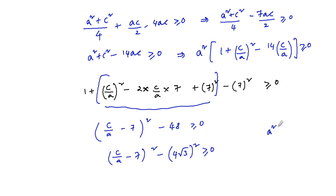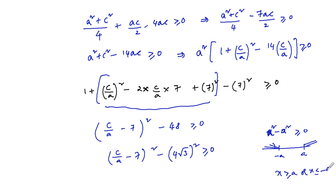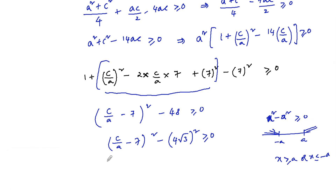This is of the form x² minus a² is greater than or equal to 0, so (x plus a)(x minus a) ≥ 0, which means x is greater than or equal to a or x is less than or equal to minus a. Therefore, we can write this as the modulus of (C/A minus 7) is greater than or equal to 4√3.